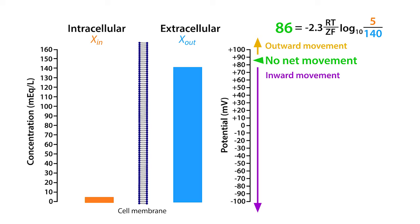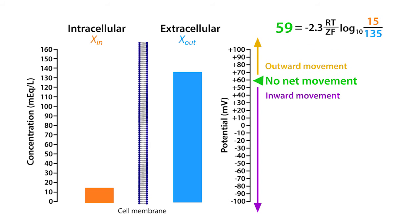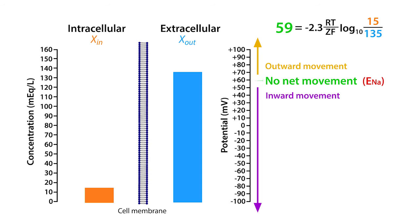Let's move the intracellular and extracellular concentrations to 15 and 135 milliequivalents, respectively, which is typical for sodium ions. At these concentrations, the sodium equilibrium potential equals plus 59 millivolts. This also means that sodium ions will move into the cell when the electrical potential is less positive than the equilibrium potential. However, if we wanted sodium to move out of the cell against its concentration gradient, we'd have to make the electrical potential more positive than the equilibrium potential.